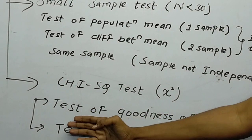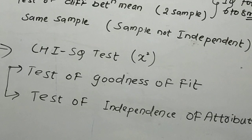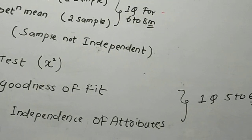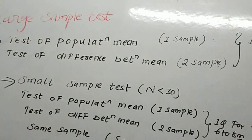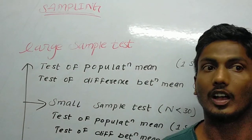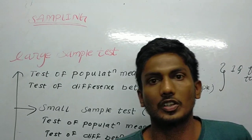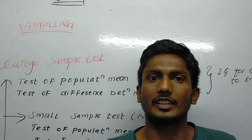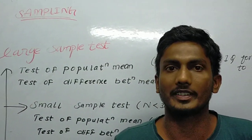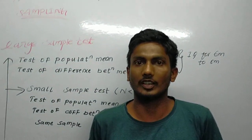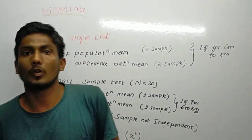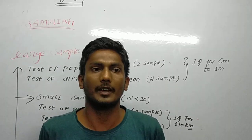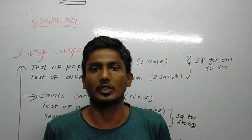Chi-square test: test of goodness of fit and test of independence of attributes — one question for five to six marks. Friends, if you skip ANOVA and Big-M, you can still score 80 out of 80. If you have any backlog, comment below. Do subscribe and share with your friends so they are also alert and well-prepared. Thank you for watching.